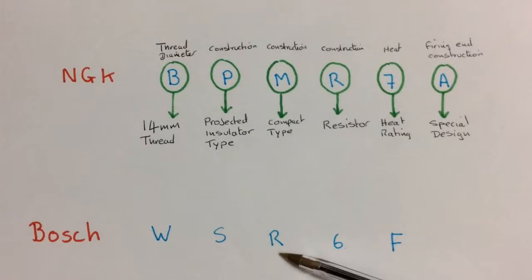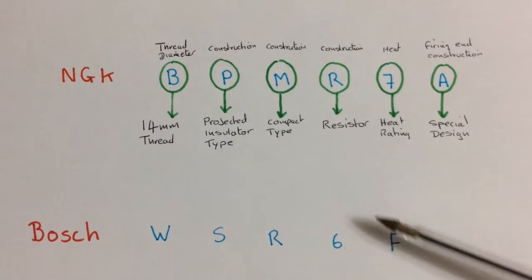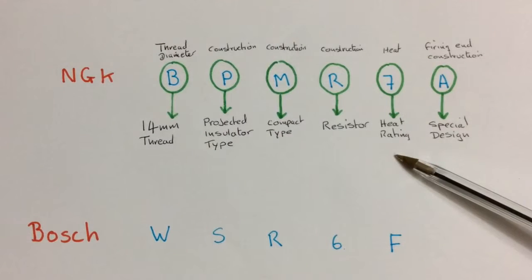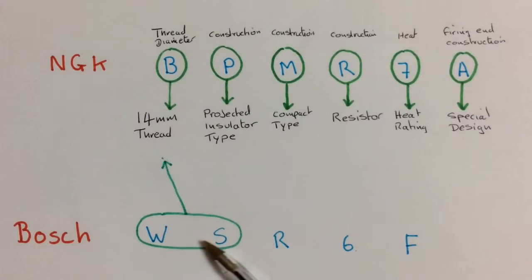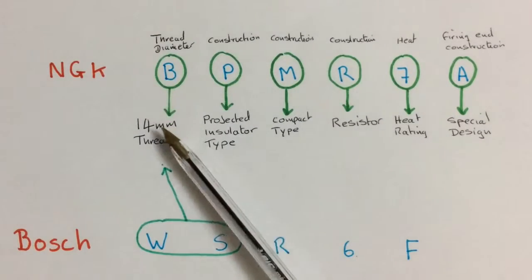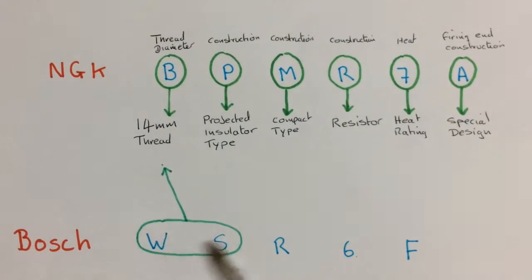Now let's see why the Bosch WSR6F plug is also a good plug for this machine and what characteristics are similar to the NGK one. First of all, if we look at these first two letters, together they mean the same as the B on the NGK. So together they mean 14mm thread.